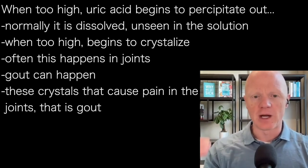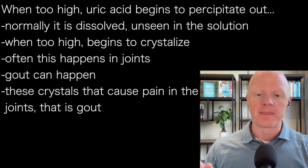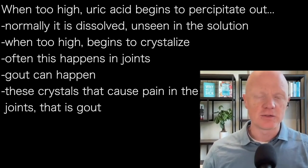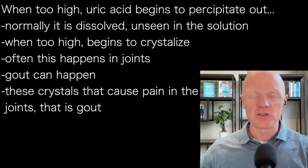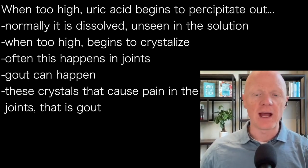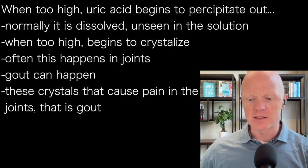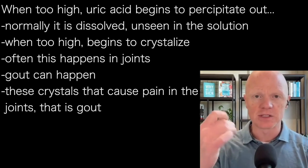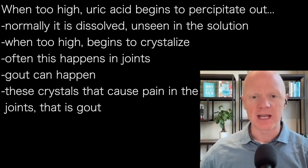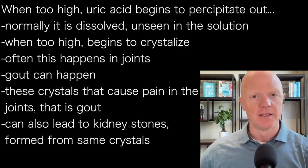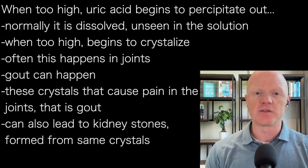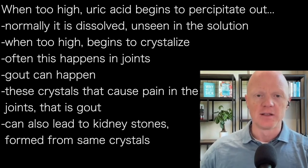However, when levels start to get too high in the blood, the uric acid can start to come together and crystallize, and they often crystallize in joints — causing the person to develop gout. Gout is when uric acid has reached a point that it is literally crystallizing into jagged little crystals, making people's joints ache. High uric acid levels can also lead to higher uric acid in the urine, giving rise to kidney stones built on a matrix of uric acid crystals.